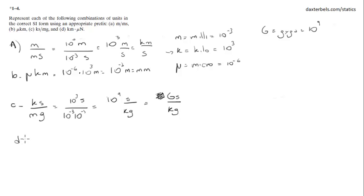Part D: kilometers times micronewtons. That's 10 to the third for kilo and 10 to the negative 6 for micro. This gives 10 to the negative 3, because 3 minus 6 equals negative 3: meter-newtons, or millinewton-meters. Could be both.